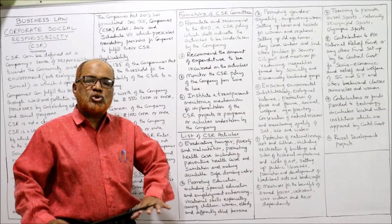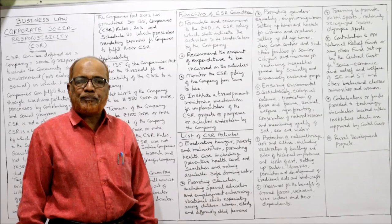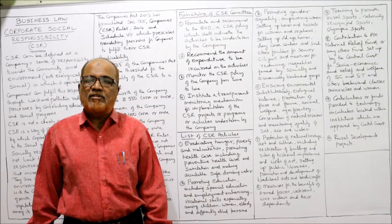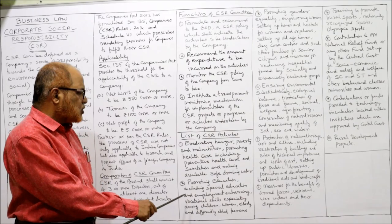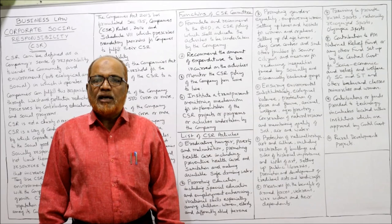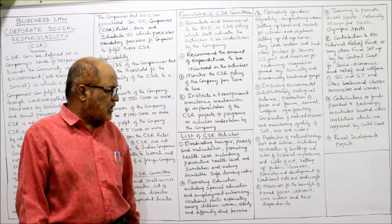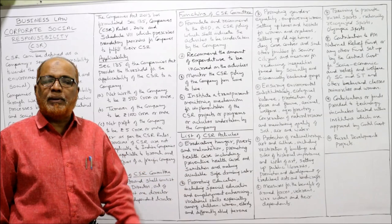The second CSR activity is promoting education, because without education there is no scope for development. Proper funds should be invested in education. This includes special education and employment-enhancing vocational skills, especially for children, women, elderly people, and differently-abled persons. Particularly in India, with its vast population, the unemployment problem is significant — if education increases, opportunities for employment also increase.